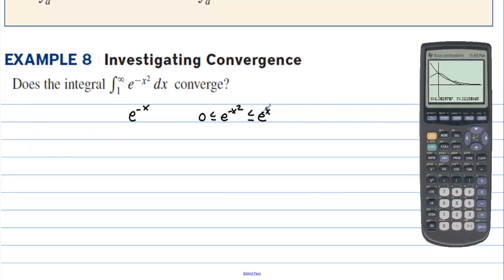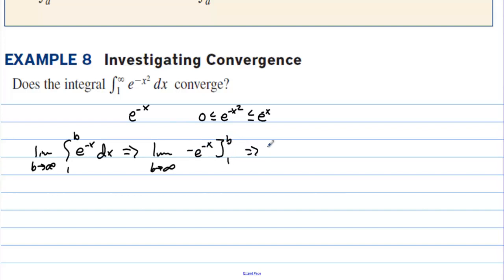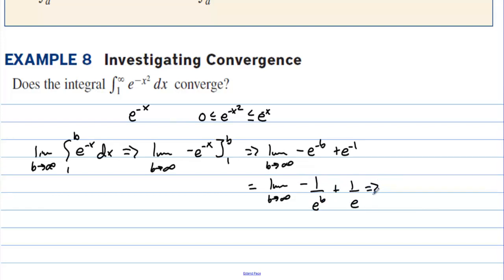We take the limit as b approaches infinity of the integral from 1 to b of e to the negative x dx. That's the limit as b approaches infinity of negative e to the negative x evaluated from 1 to b, which equals the limit as b approaches infinity of (negative e to the negative b plus e to the negative 1). This equals negative 1 over e to the b plus 1 over e. As b goes to infinity, the first term goes to 0, giving us 1 over e. So the original function converges.